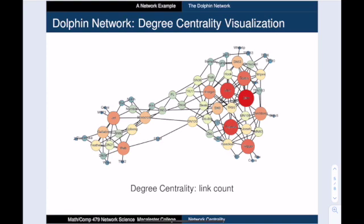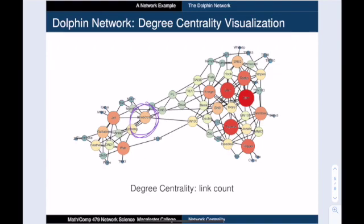And then in the smaller group, there are some popular dolphins there too. But there's only one of them, bee scratch, that actually has connections outside of the smaller group.